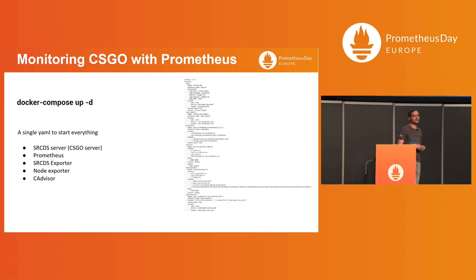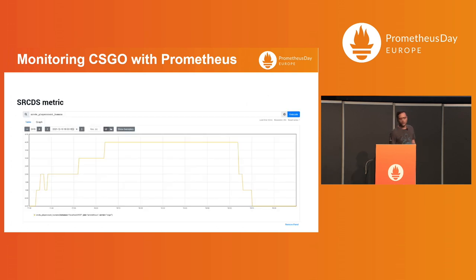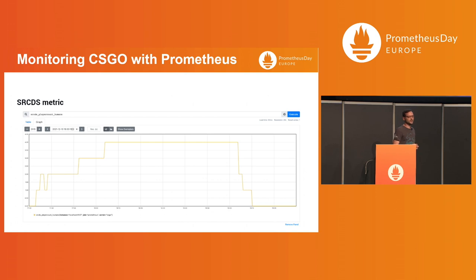If we focus on the CRCDS exporter, we saw that it exposes a few metrics. Which of those metrics do we want to monitor? We will start checking the number of people playing the game at the moment. We could also check the map that is being played. The metric value is always one, and you can check in the label the name of the map that is being played.